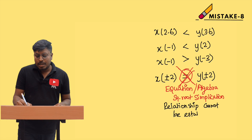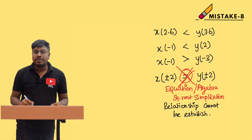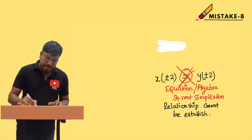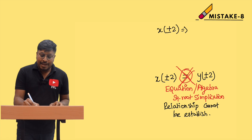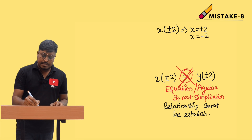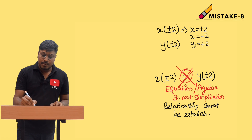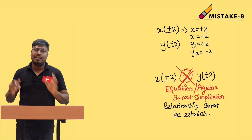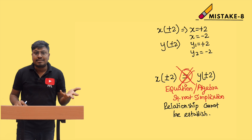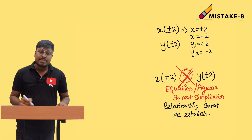The reason the relationship cannot be established is: if x = ±2, that means one value of x is +2 and another value is −2. Similarly, y = ±2 means one value of y is +2 and another is −2. When you compare all values of x with all values of y, some comparisons are greater than and some are less than. That is why we say the relationship cannot be established.